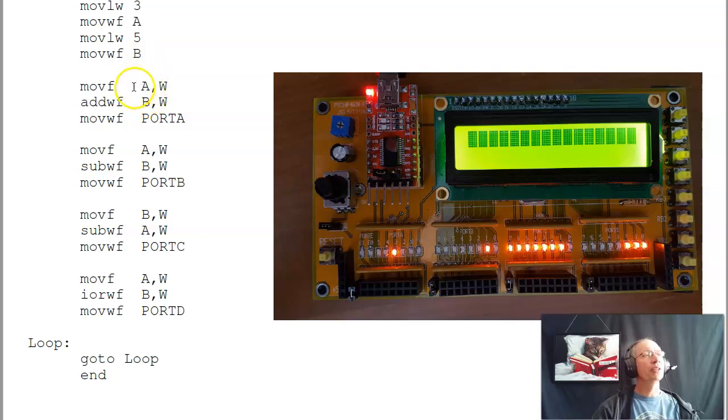I'll now, to add the two together, move a to w, add b to w, put the result in w, move w to port a. And what I see in port a, port a is now 8. 5 plus 3. To do b minus a, I'll do move a to w, subtract w from b, put the result in w, put that answer in port b, and 5 minus 3 is 2. Now let's do the other way around. Move b to w, subtract b from a, put the result in w. 3 minus 5 is minus 2. This is minus 2. That's actually 254, which is minus 2 in 2's complement notation.